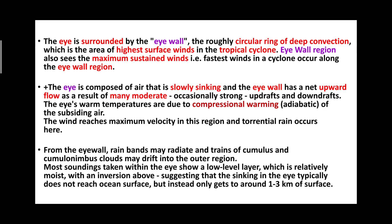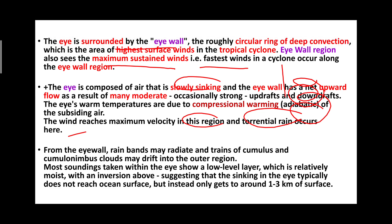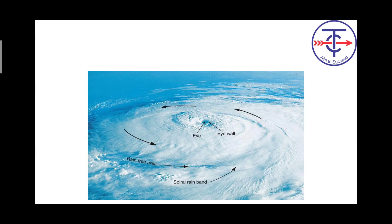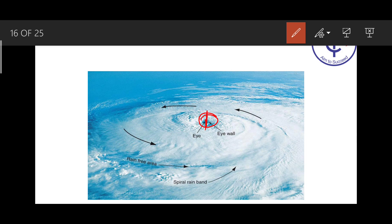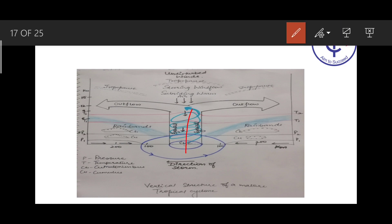Eye wall is a circular ring with the highest surface winds and maximum sustained fastest winds. The eye is composed of slowly sinking air; the eye wall has net upward movement with compressional warming. Wind reaches maximum velocity in this region and torrential rain occurs here. Rain bands may radiate outward with cumulus and cumulonimbus clouds in the outer range. The NCERT diagram shows: eye at the center, eye wall surrounding it with circular wind flow, subsiding air in the eye, outflow at the top — upper divergence — and convergence at the surface.